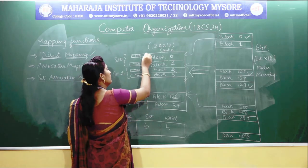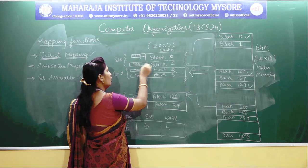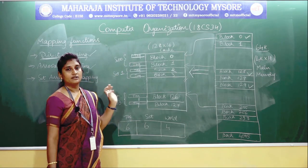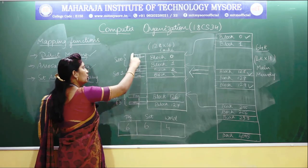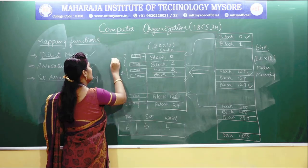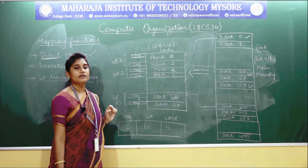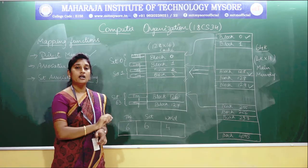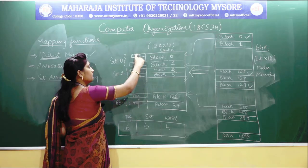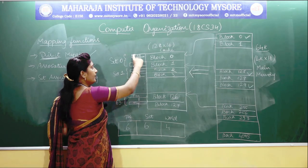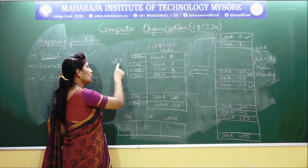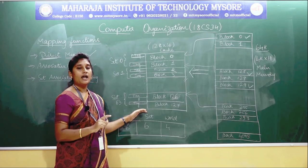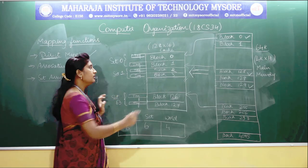In cache memory, you will have tags for each block of the cache memories. You will group a couple of tags — that is two tags — and make them into a single set. You will give the name for each set as 0, 1, 2, 3, and so on. Instead of having two separate tags, you will group two tags as a single set and give a name to that particular set. Likewise, you group all the tags and make them into sets.